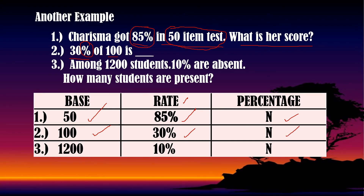Number 3: Among 1,200 students, 10% are absent. We can easily identify: 1,200 is the base because it pertains to the whole group of students. We have 10 with a percent sign — that is the rate. And the unknown is the percentage.